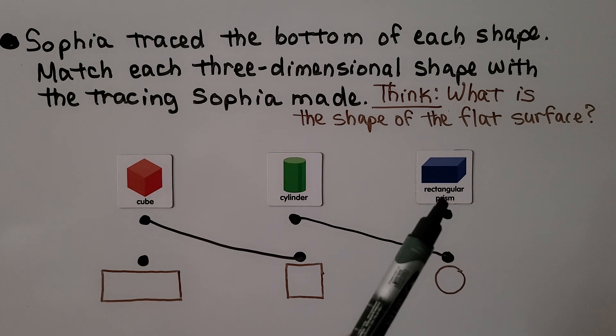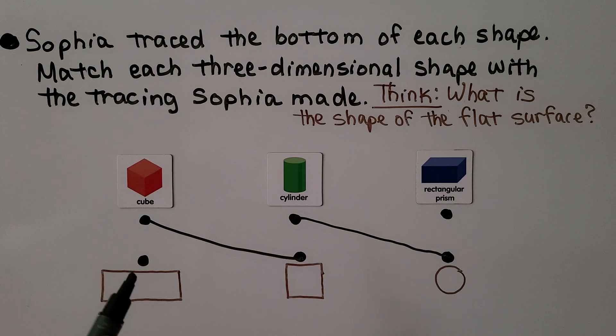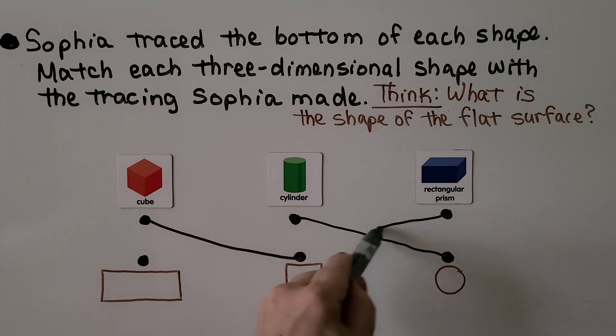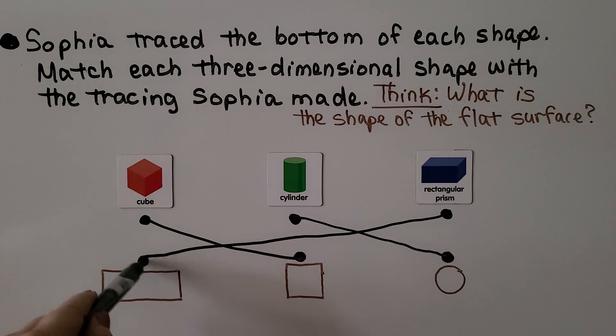For rectangular prism, it would be a rectangle shape, wouldn't it? So we can draw this line coming over to this dot.